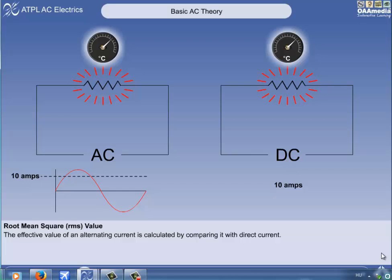To make the resistor as hot with an AC current, its peak value must be higher, so that its mean value can be 10 amps.